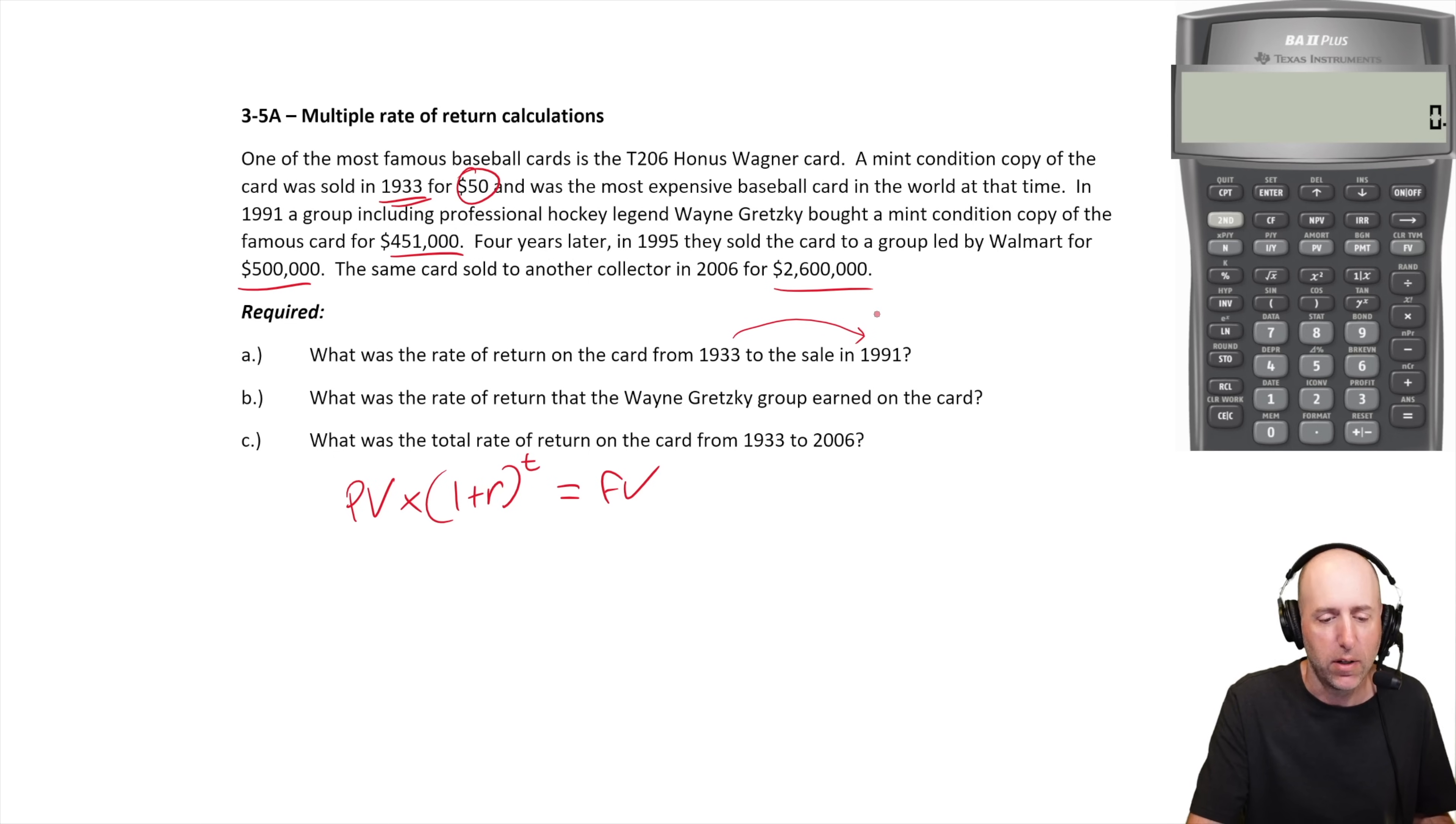The question asks what was the rate of return on the card from 1933 to 1991? If you bought the card for 50 bucks in 1933 and sold it to Gretzky in 1991 for $451,000, what was your return? We're solving for r. Let's punch in what we have. Today is 1933, we buy the card for $50 times one plus r raised to the power of t. How many years? 1933 to 1991 - 58 years.